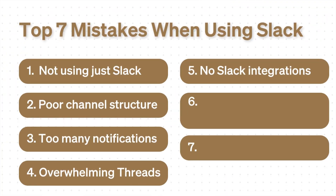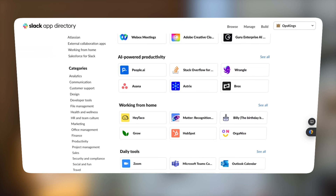Mistake number five: not using Slack integrations. Slack has a marketplace with over a thousand different integrations with the most common tools people use, whether that's a project management tool, a scheduling tool, or a calendar. If you have a project management tool like ClickUp, Monday, or Airtable, you can set up a quick integration with Slack and start automating a lot of the notifications — automating the creation of tasks, assigning tasks to people, all through Slack. For example, when someone's task goes overdue, you can send them a notification directly in Slack. These don't take much time to set up and they make a big difference in the speed of getting things done within your organization.